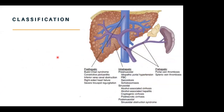In terms of classifying portal hypertension, we classify them as pre-hepatic, intra-hepatic, and post-hepatic. The post-hepatic causes commonly include Budd-Chiari and constrictive pericarditis, inferior vena cava obstruction, and right-sided heart failure with tricuspid regurgitation. In terms of intra-hepatic, we classify as pre-sinusoidal, sinusoidal, and post-sinusoidal.